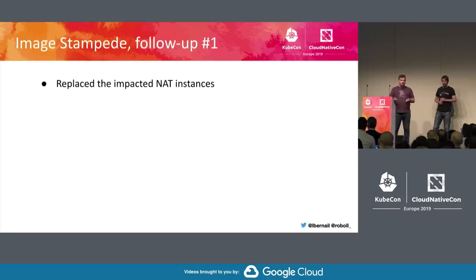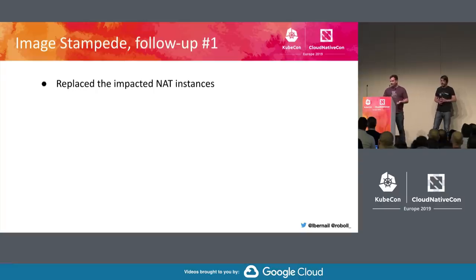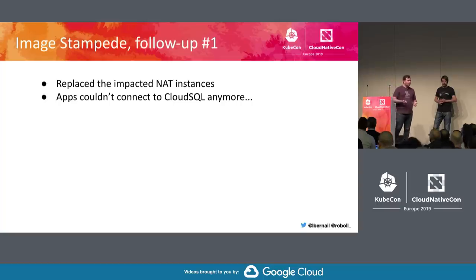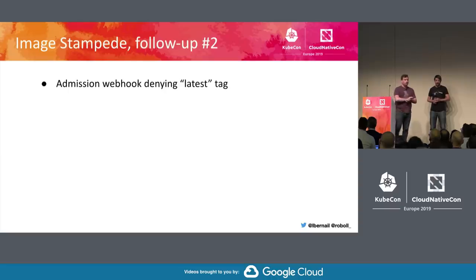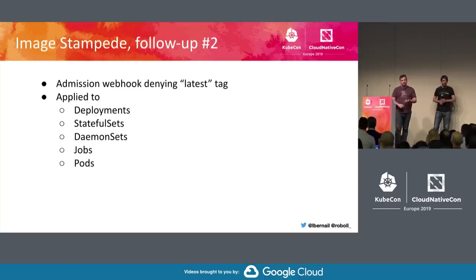To fix it we replaced the impacted NAT instances — new source IPs, traffic was okay again. But we forgot we accessed some critical services over the Internet, including a Cloud SQL database that wasn't available over private VPC yet. All apps connecting to Cloud SQL had their connections severed. After a couple of hours reconfiguring firewall rules for the static IPs, everything came back. As a follow-up, we created an admission webhook disallowing floating image tags like 'latest', attached to deployments, stateful sets, daemon sets, jobs, and pods.